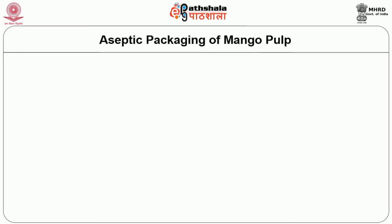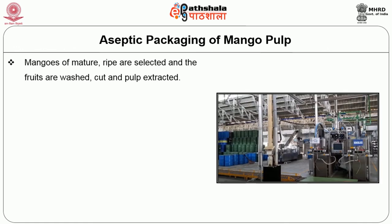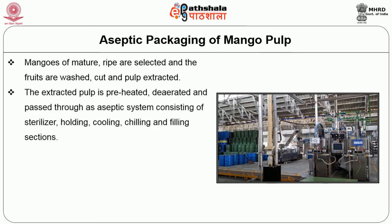Before summarizing, we will look at a few points about aseptic packaging of mango pulp. Mangoes that are mature and ripe are selected, and the fruits are washed, cut and pulp extracted. The extracted pulp is preheated, de-aerated and passed through an aseptic system consisting of a sterilizer, holding, cooling, chilling and filling sections.